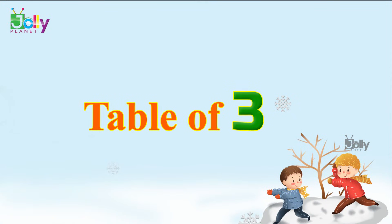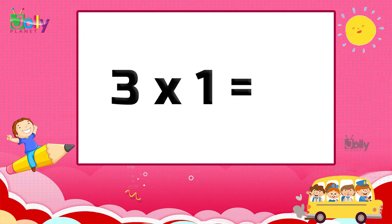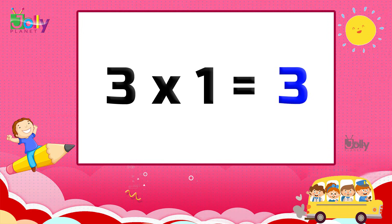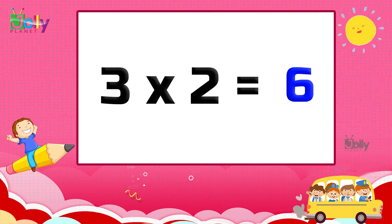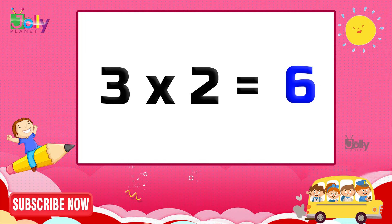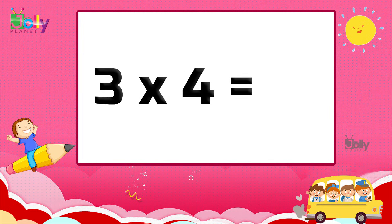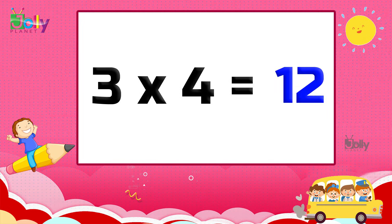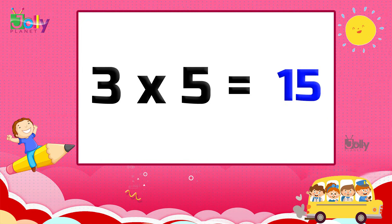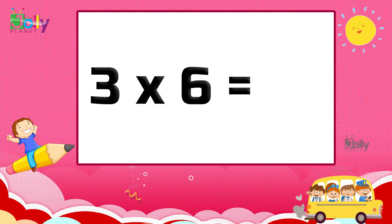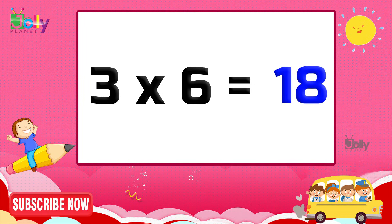Table of three. Three one's are three. Three two's are six. Three three's are nine. Three four's are twelve. Three five's are fifteen. Three six are eighteen.